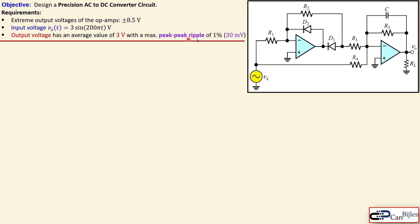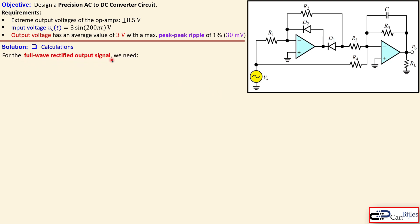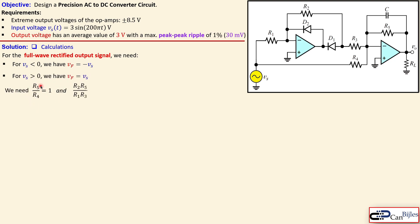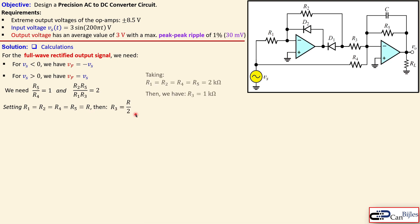We are allowed a maximum peak-to-peak ripple of 1%, which is 1% of 3 V = 30 mV. For the first calculation of the full-wave rectified output signal, we set up the required ratios for R5/R4 and R5/R3, and we have chosen the same values as the discussed example.